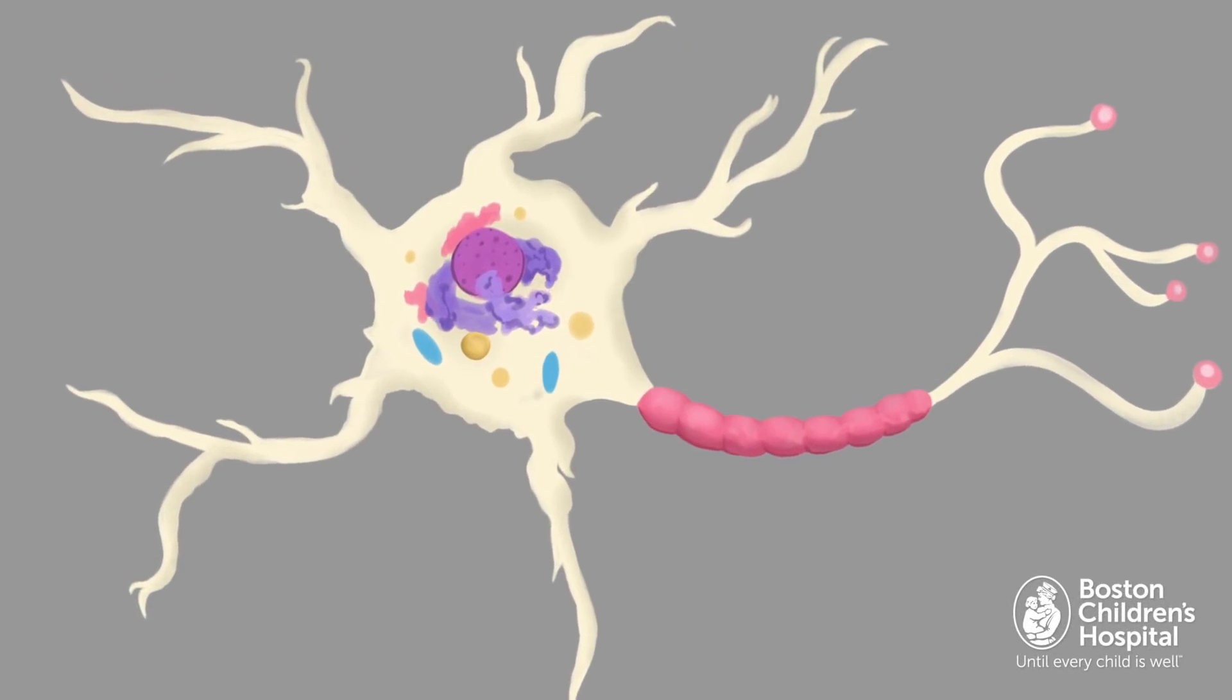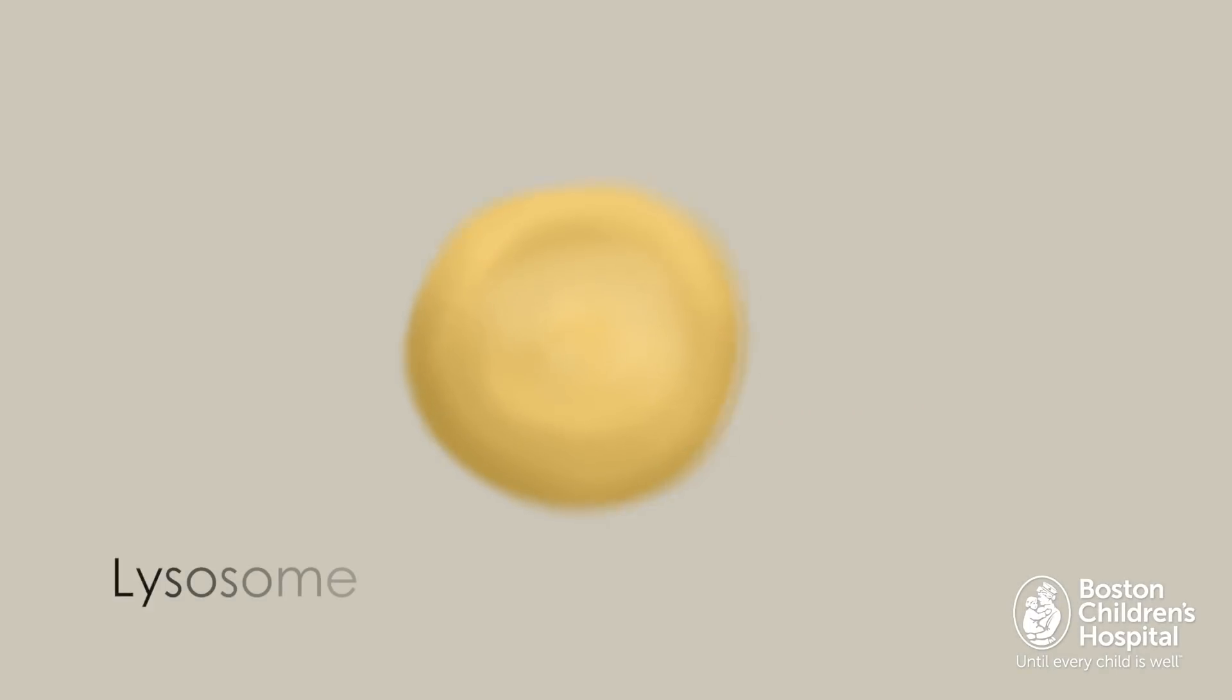This is a cell in Mila's brain, and this is a lysosome, which breaks down the cell's waste.